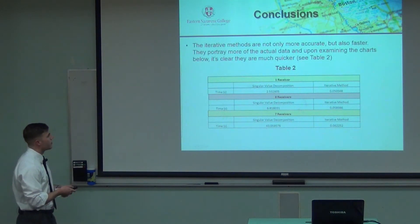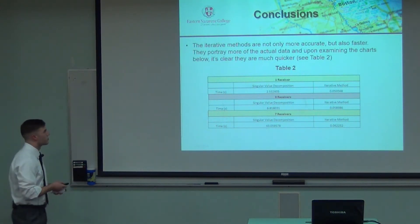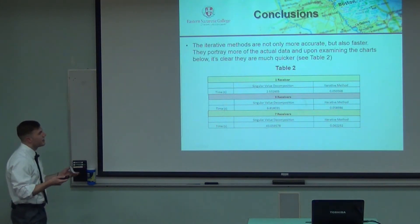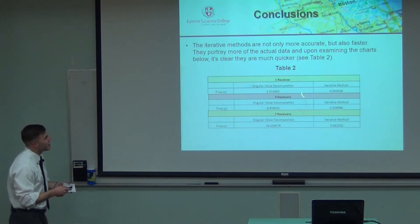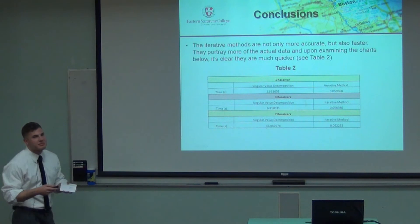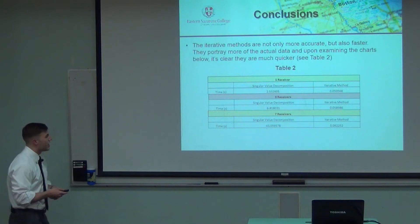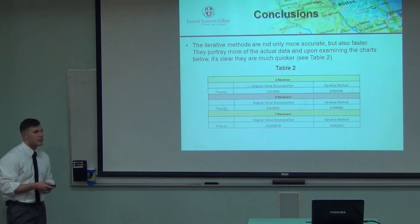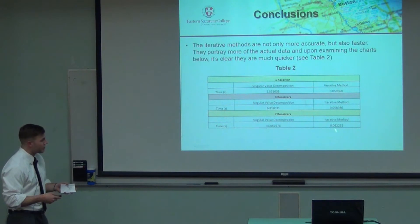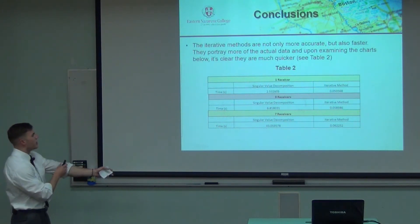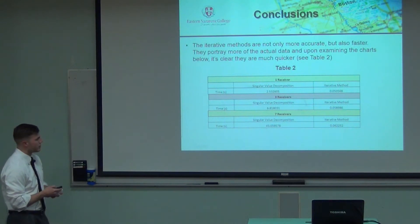On the time component and real-time performance: there's no comparison here. The iterative method takes five hundredths of a second versus a couple of seconds for SVD with one receiver. Three receivers: seven to eight seconds for SVD, still on par iteratively. Seven receivers: SVD takes about 43 to 45 seconds, and keep in mind we're dealing with around 400 receivers on average. Iteratively, we stay well below one second throughout, while SVD scales exponentially. We're saving enormous amounts of time and money by pursuing the iterative method over SVD.